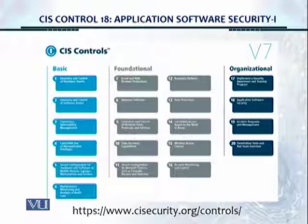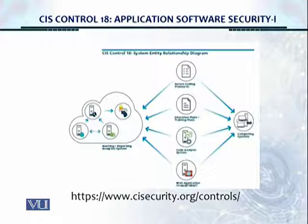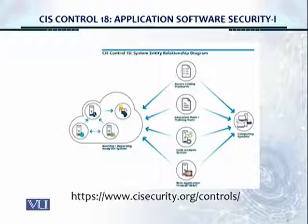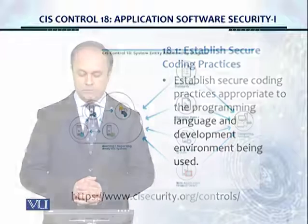This is the layout for version 7 CIS controls, and we're now in CIS control number 18, application software security. These are the mechanisms we will use: secure coding standards, education plans and training plans, code analyst systems for code reviews, and web application firewalls — for example, WAF systems.